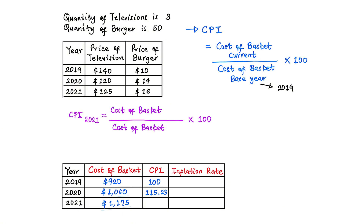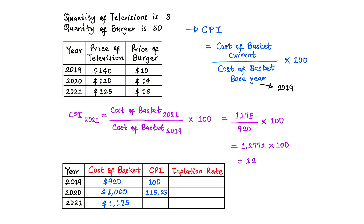The CPI in 2021 equals the cost of basket in 2021 (1175 dollars) divided by the cost of basket in the base year 2019 (920 dollars), times 100. That gives us 1175 ÷ 920 = 1.2772, times 100 = 127.72. The Consumer Price Index in 2021 is 127.72.